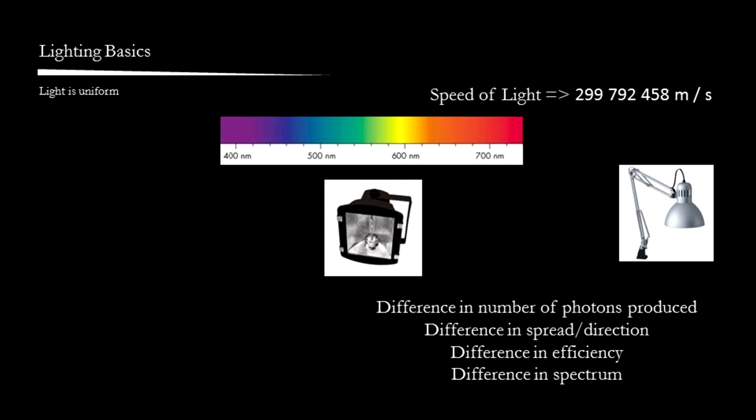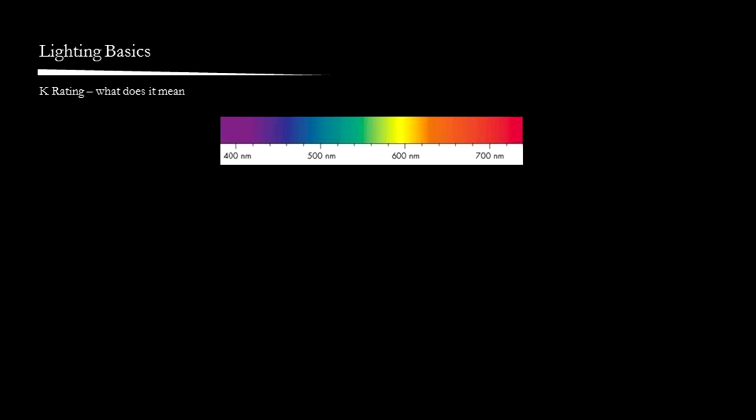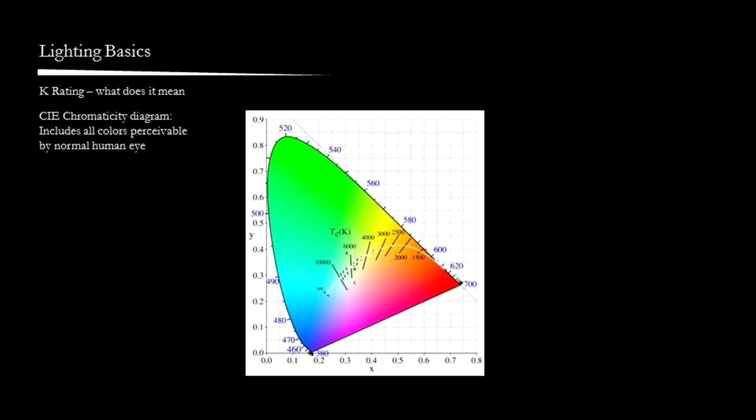It all depends on the spectrum of the exact lamp, the number of photons produced, the spread, as well as the efficiency of the lamp. The next topic I want to talk about is K rating. So for example, when people say use a 6500K light, what does it mean? The first thing to know is that K rating has absolutely nothing to do with how strong the light is. Rather, it is a numerical indicator of the visual hue of the light. To understand this, I have to introduce you to the CIE chromaticity diagram.